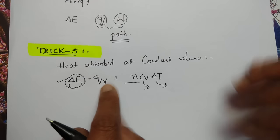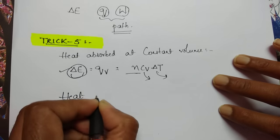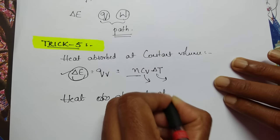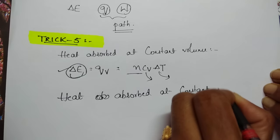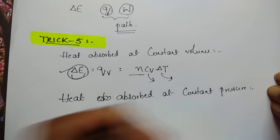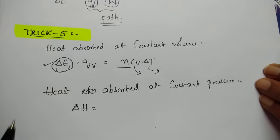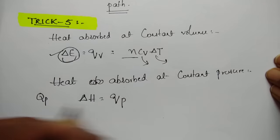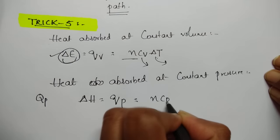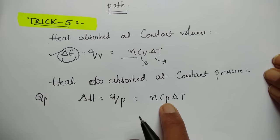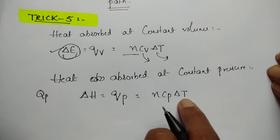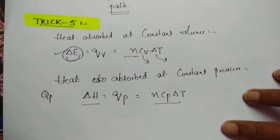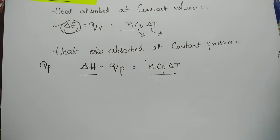Heat absorbed at constant pressure: QP = ΔH = nCpΔT. This is the enthalpy change. Heat capacity at constant pressure and change in temperature are given in the question. Substitute all three values and you can find the result.